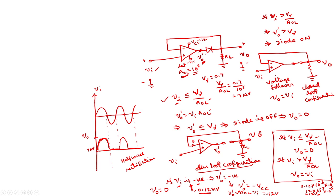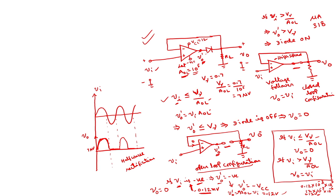Because V_0 dash saturates during the negative half cycle, it takes more time to recover. To reduce this response time, instead of using a single diode you can use two diodes to perform the half wave rectification. A better circuit for a half wave rectifier uses two diodes and provides improved performance.